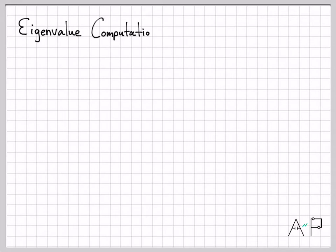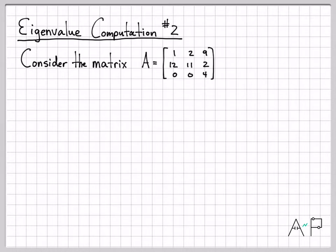All right, in this example we're going to do another eigenvalue computation. We're going to work with the matrix A, which is defined right here. It's a three by three matrix, and we're going to do two things.